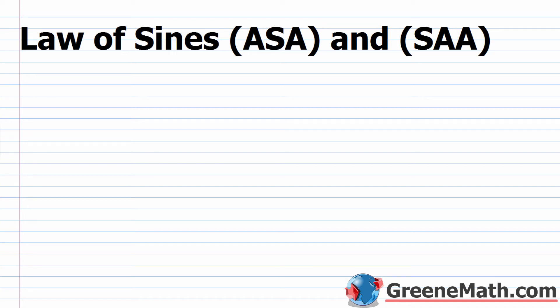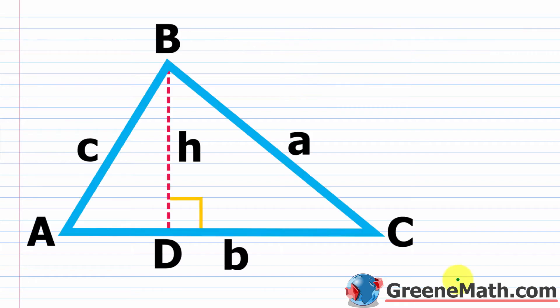In this lesson, we want to talk about the law of sines, and specifically we'll look at the easier case where we have angle-side-angle, and then also if we have the side-angle-angle. Before we jump in and look at problems, I want to talk a little bit about where the law of sines comes from. If you're not really interested in how this gets derived, you can just skip ahead to the examples.